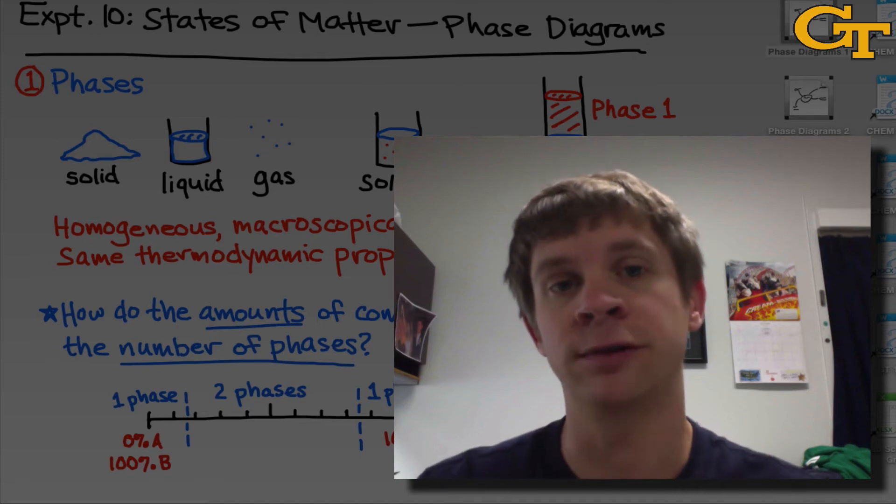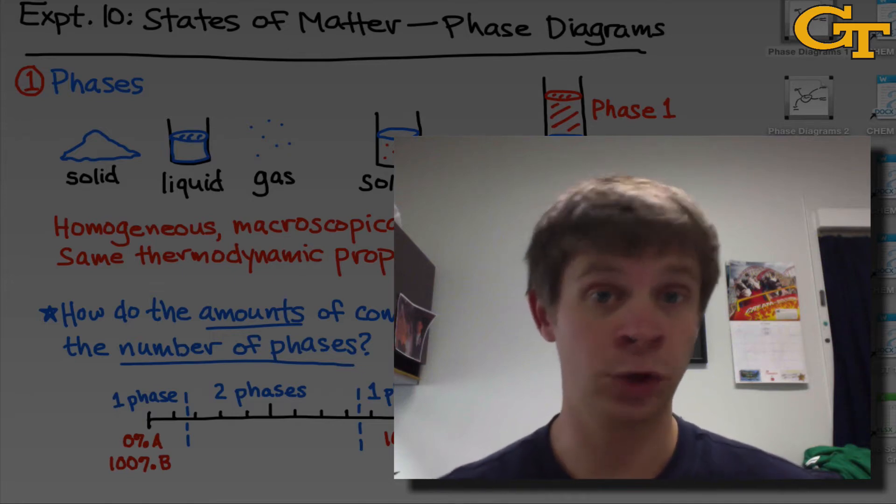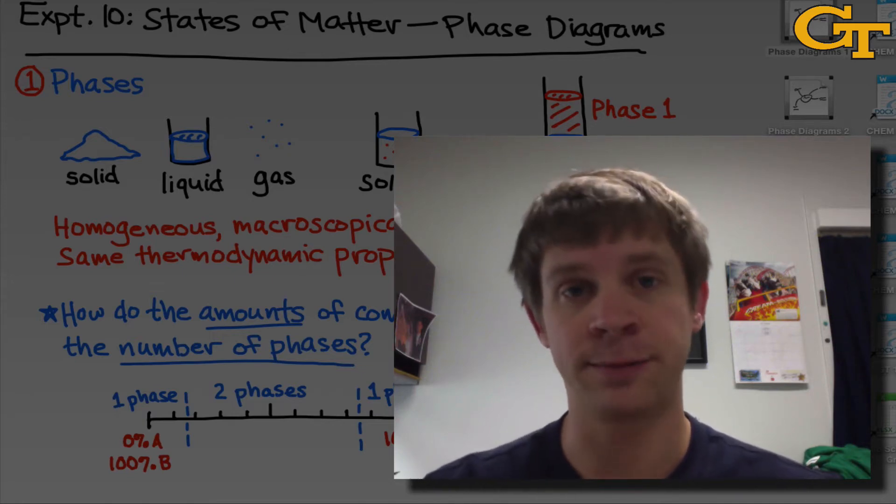We'll find that the amounts of liquids within a mixture can actually dictate the number of phases that we observe, whether we observe one uniform solution or two phases that have separated out.